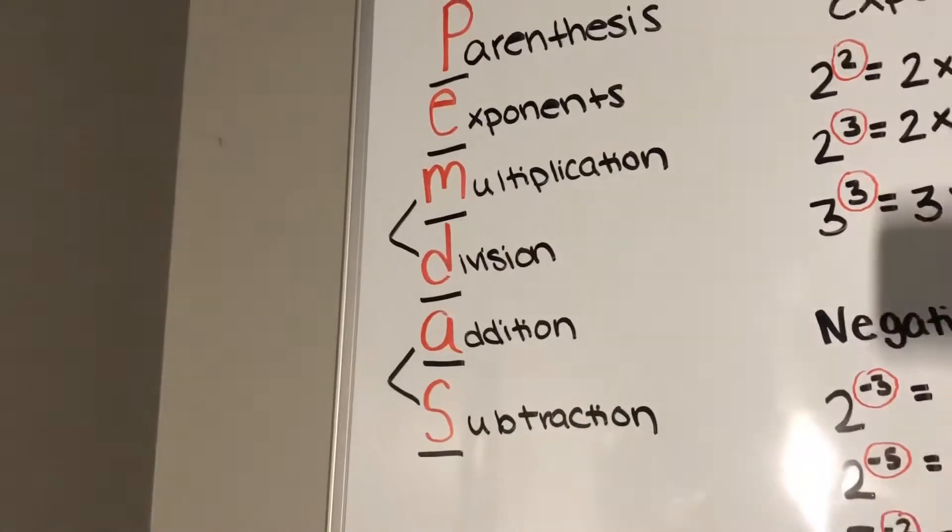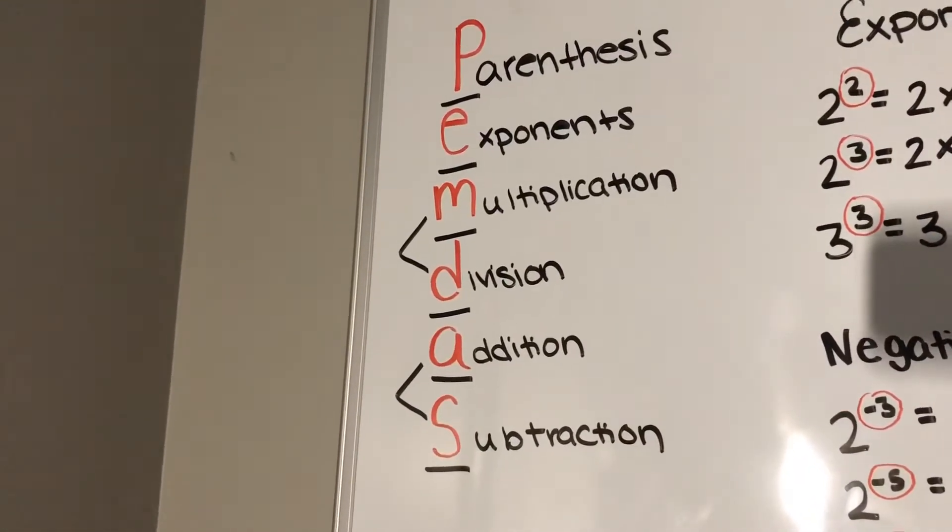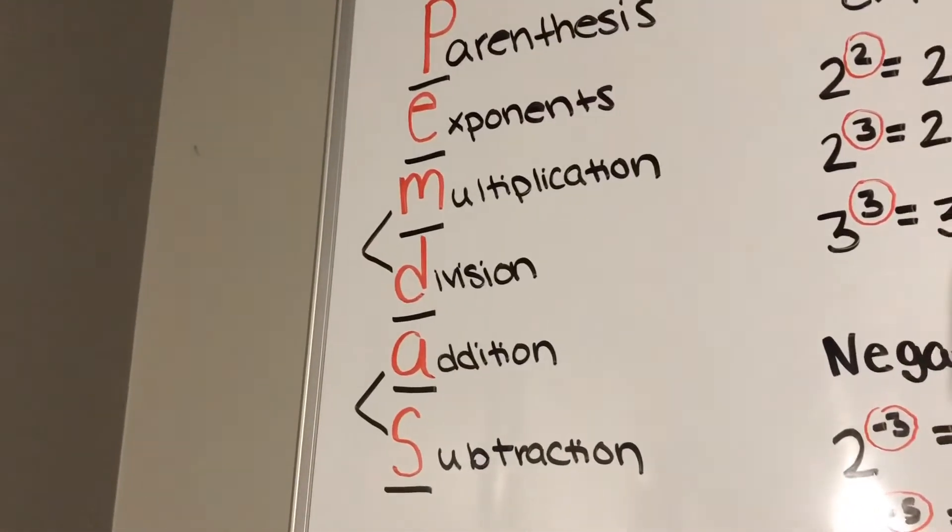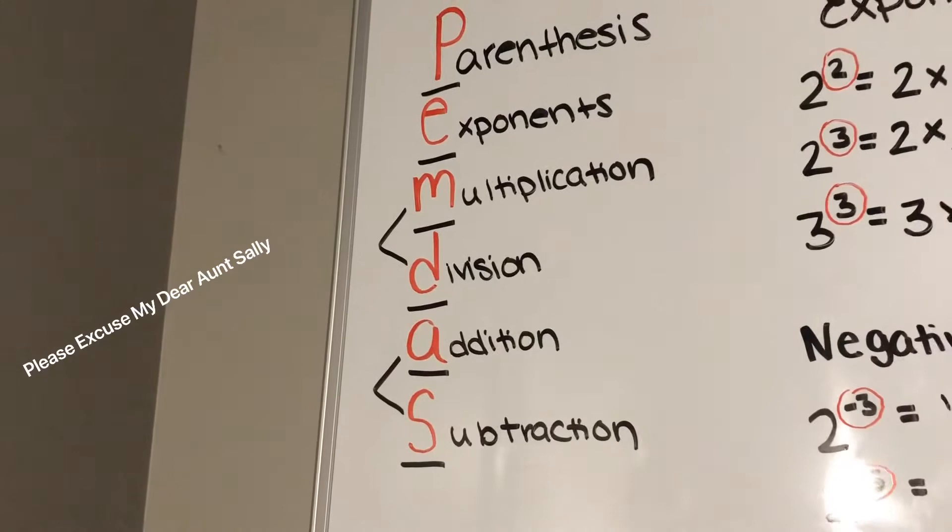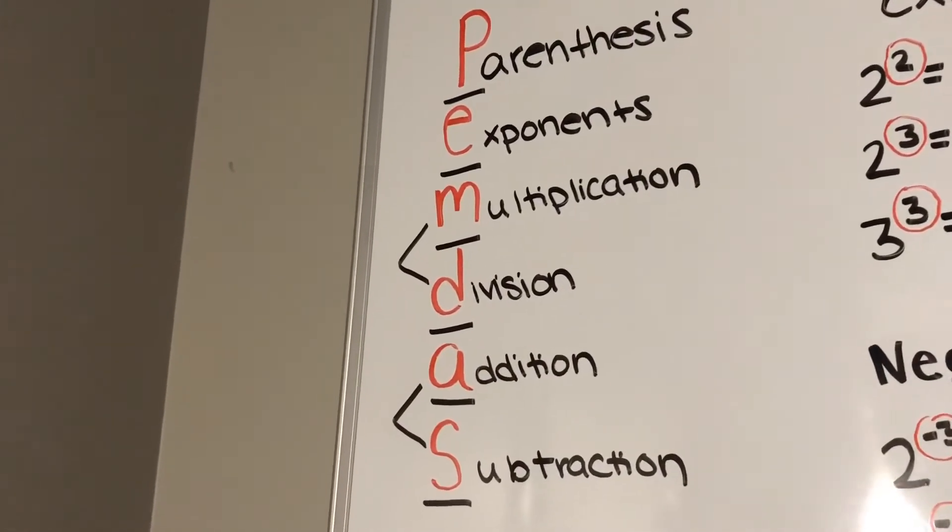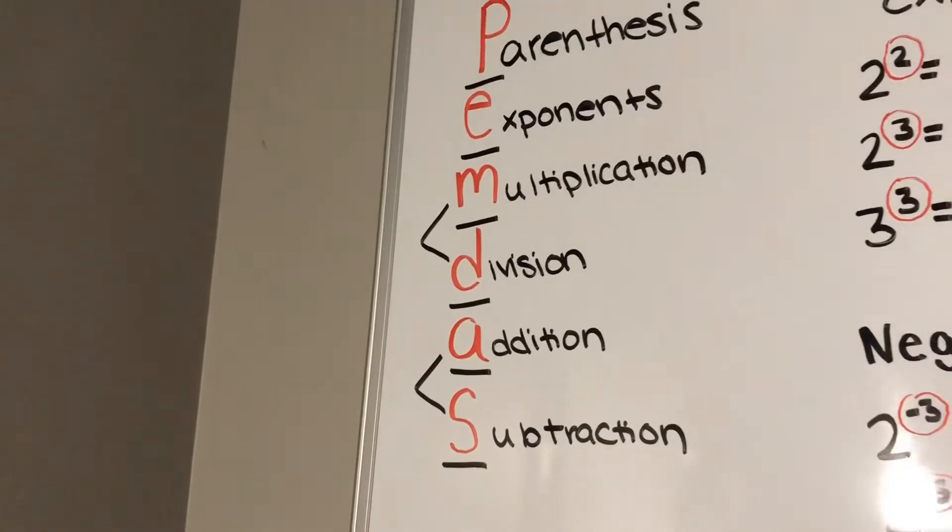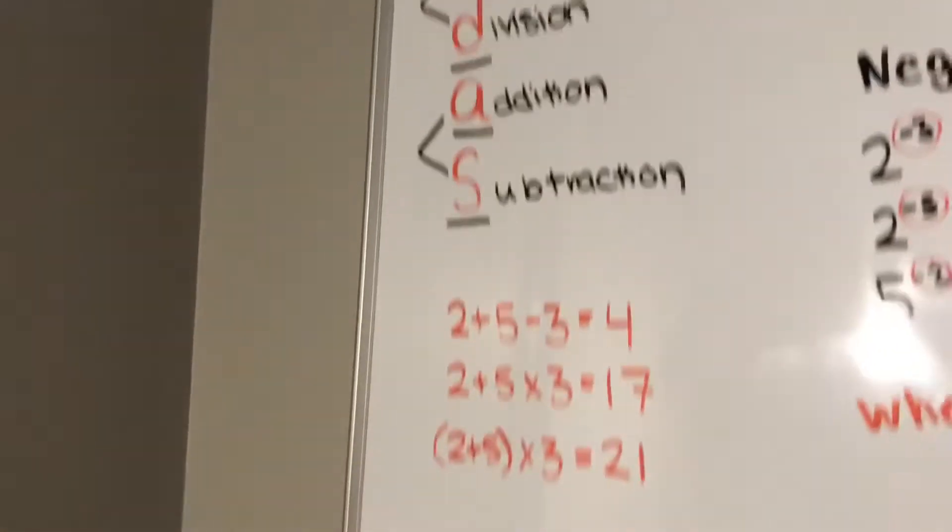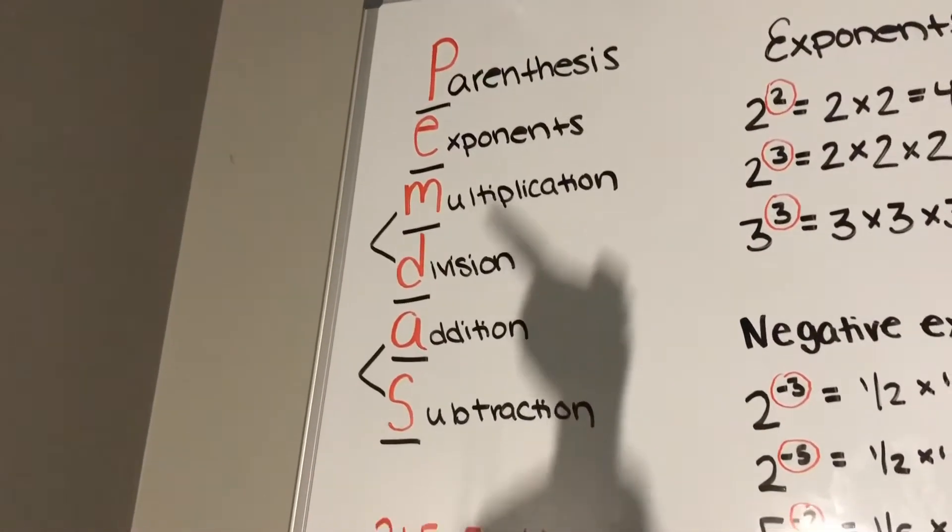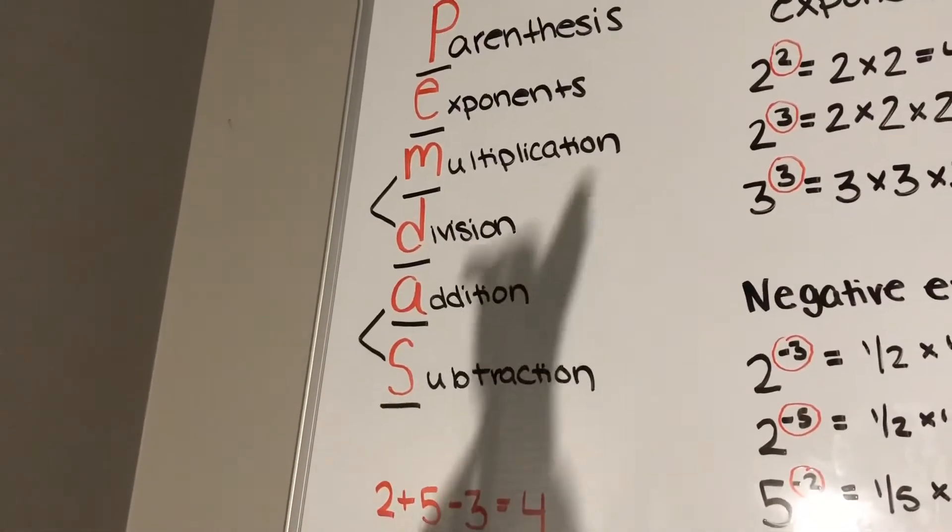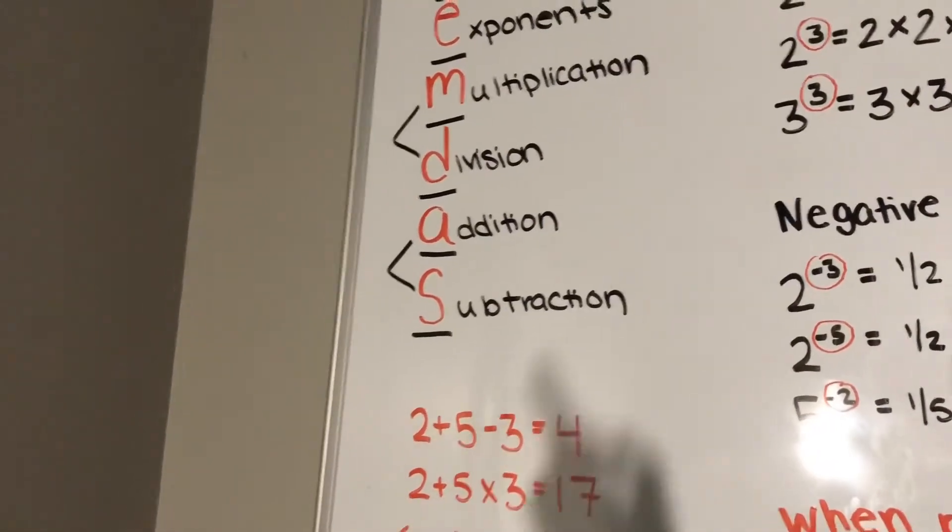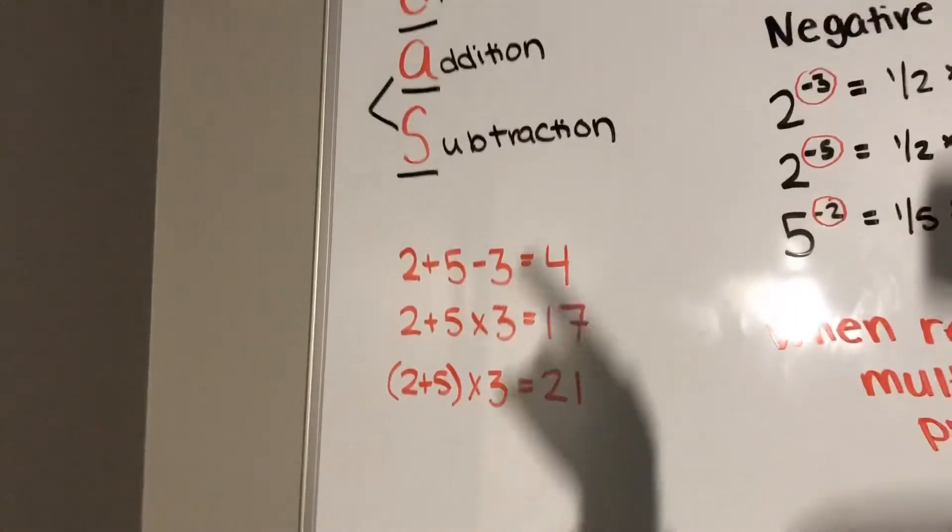Here we have basic math, and here is PEMDAS, which is broken down into parentheses, exponents, multiplication, division, addition, and subtraction. People can memorize it as, please excuse my dear Aunt Sally. So if you have a math problem that involves any of these, you want to go in the order of parentheses first and exponents, and multiplication and division. It depends which one comes first in the equation, and same with subtraction.